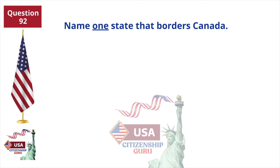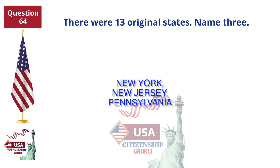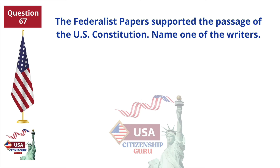Name one problem that led to the Civil War. Slavery. Name one state that borders Canada. New York. There were 13 original states — name three. New York, New Jersey, and Pennsylvania. The Federalist Papers supported the passage of the U.S. Constitution — name one of the writers. James Madison.